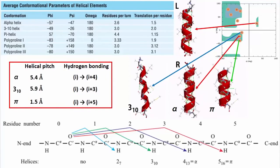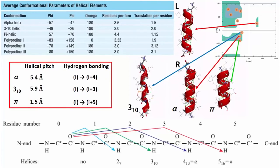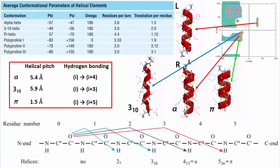For pi helix, it is between i and i plus fifth residue. If you just remember this, the rest is easy.